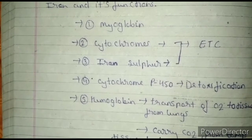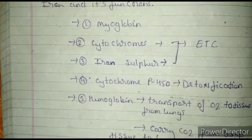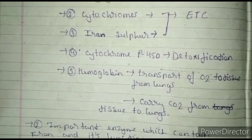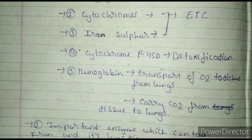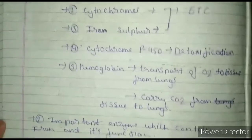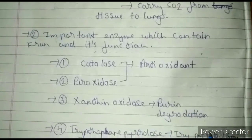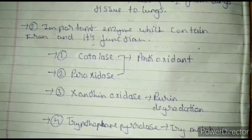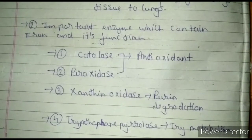Cytochrome P450 helps in detoxification. Hemoglobin helps in the transport of oxygen to different tissues from the lungs, and also helps in carrying carbon dioxide from different tissues back to the lungs. Next, there are certain enzymes which contain iron in their chemical structure.